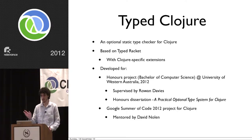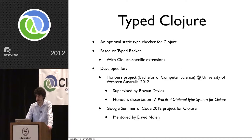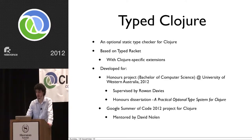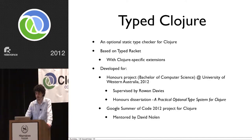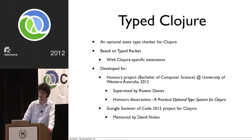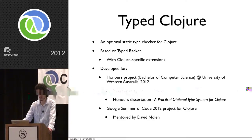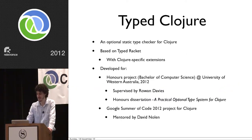Type Closure is an optional static type system for Closure, mostly based on Type Racket with some Closure-specific extensions. I've mainly built this for two projects: my honors project for Bachelor of Computer Science, supervised by Rowan Davies, with an accompanying honors dissertation submitted for marking. There's a link in the Type Closure README if you want to read the version I submitted. I also proposed Type Closure as a Google Summer of Code project in 2012, mentored by David — thanks David for mentoring me.